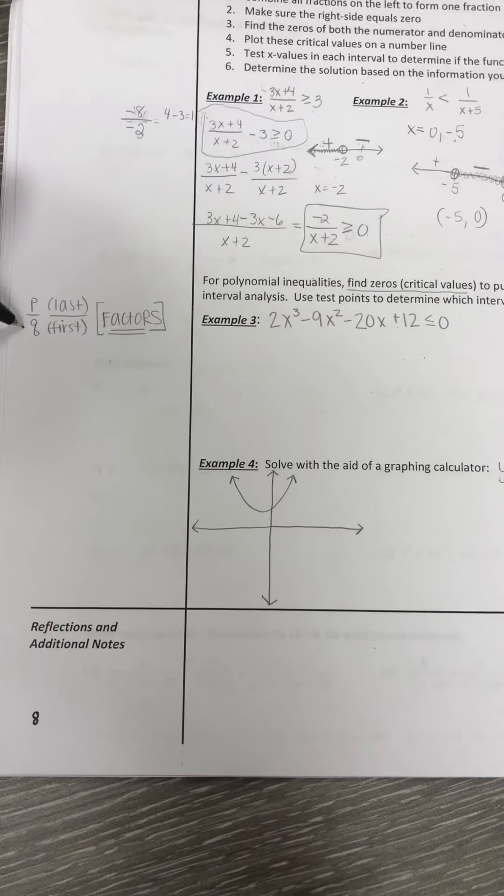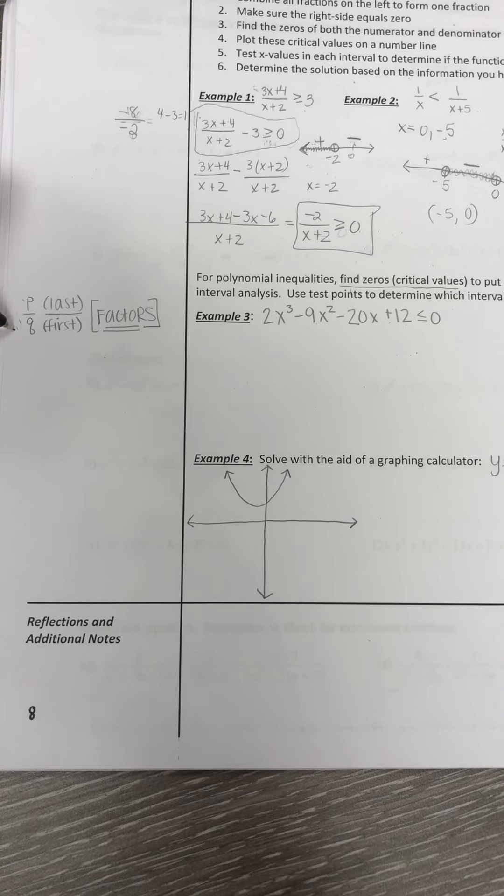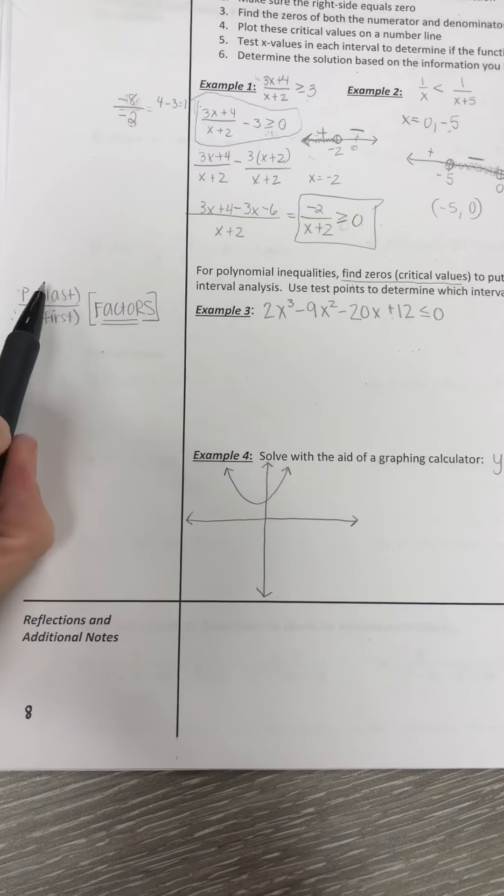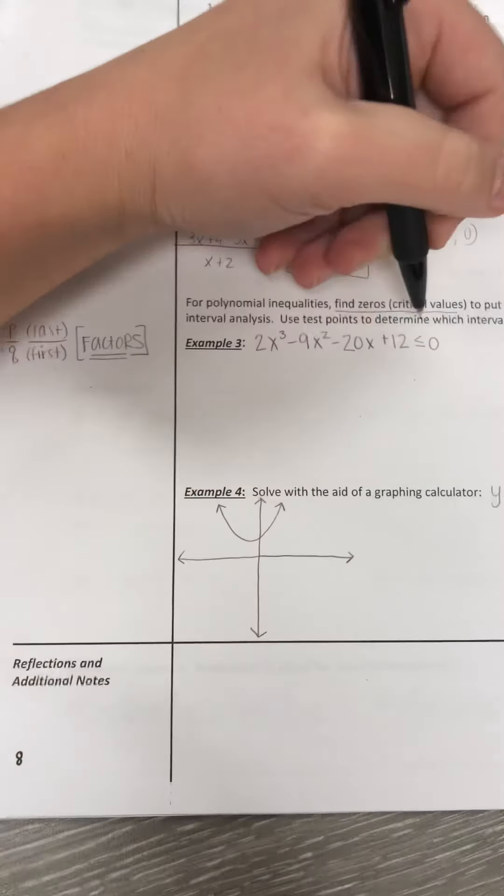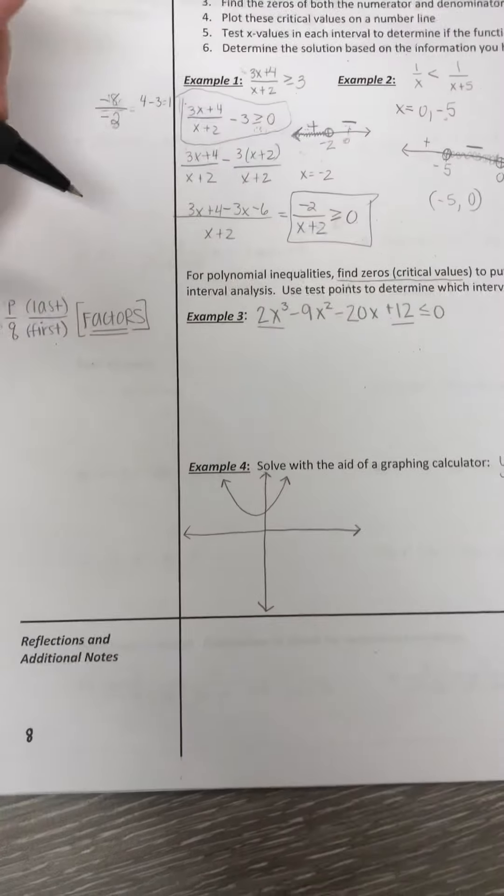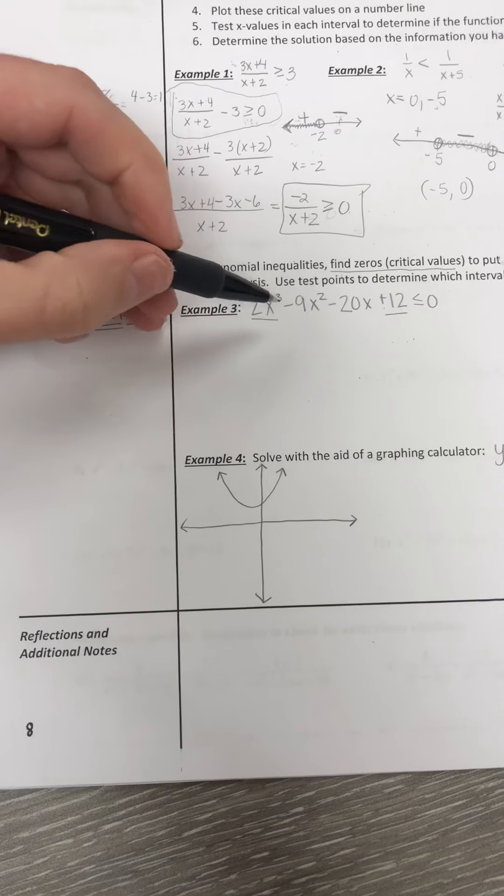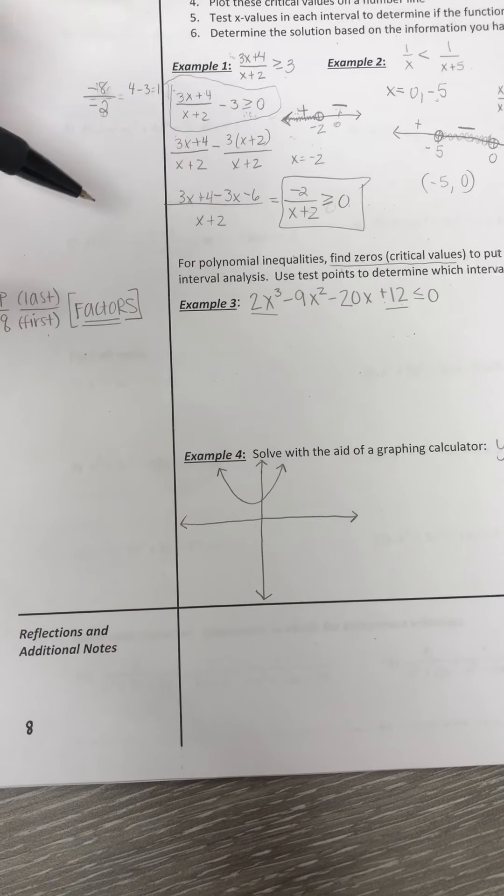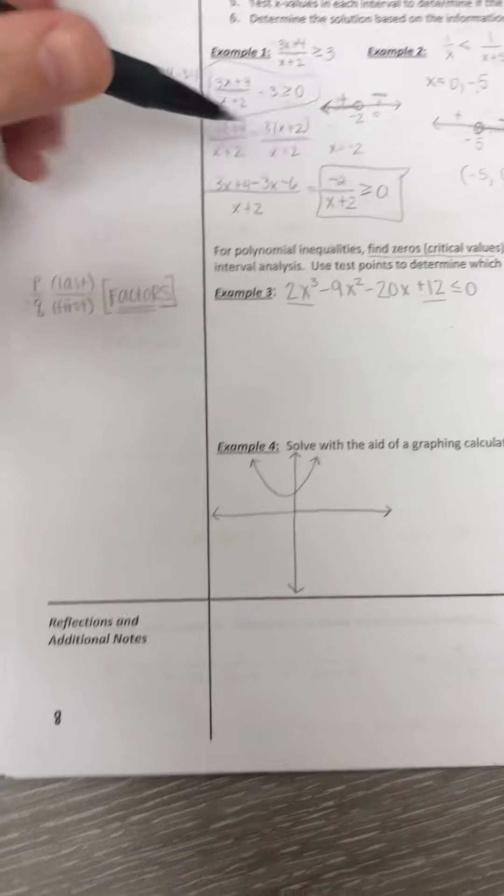So P over Q is something that hopefully you've heard of before. If not, that's okay. We're going to go over it. It is last over first. So you're looking at whatever you're given last, which in this case is 12, and whatever we're giving first, which is 2x cubed. But we're just looking at the coefficient.